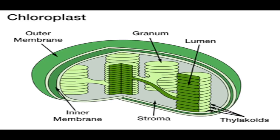A granum is composed of several thyloid membranes placed on top of one another. In between grana is a fluid-filled space known as the stroma, which can be compared to the matrix of the mitochondria. The chloroplast, with its outer membrane, inner membrane, thylakoids, grana, and stroma, is the organelle responsible for the photosynthetic process.